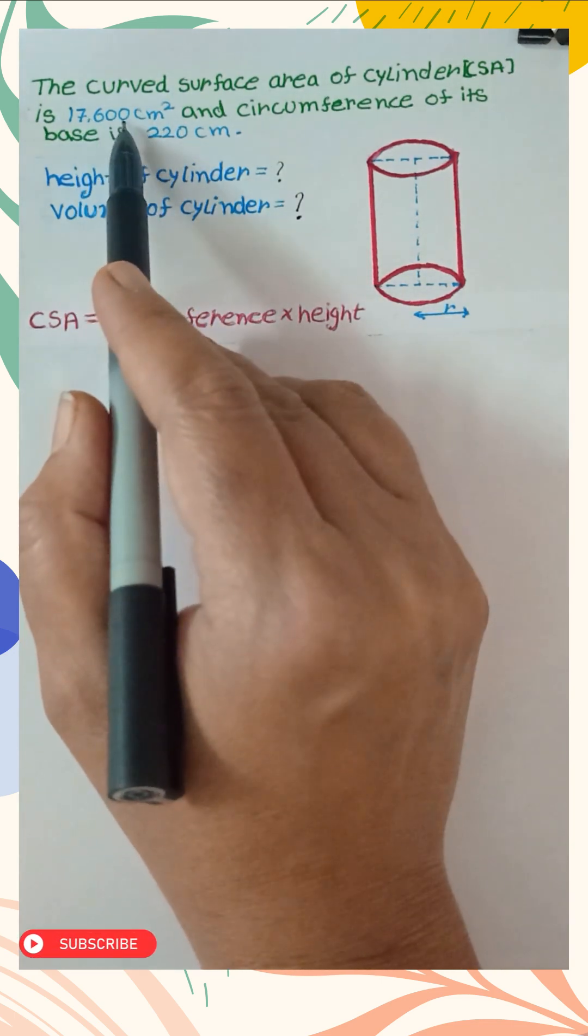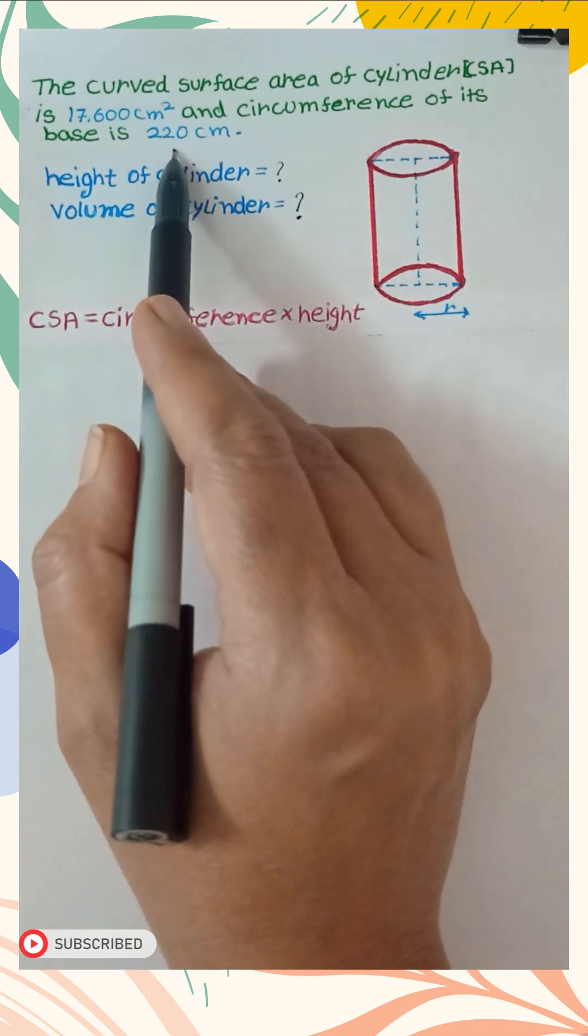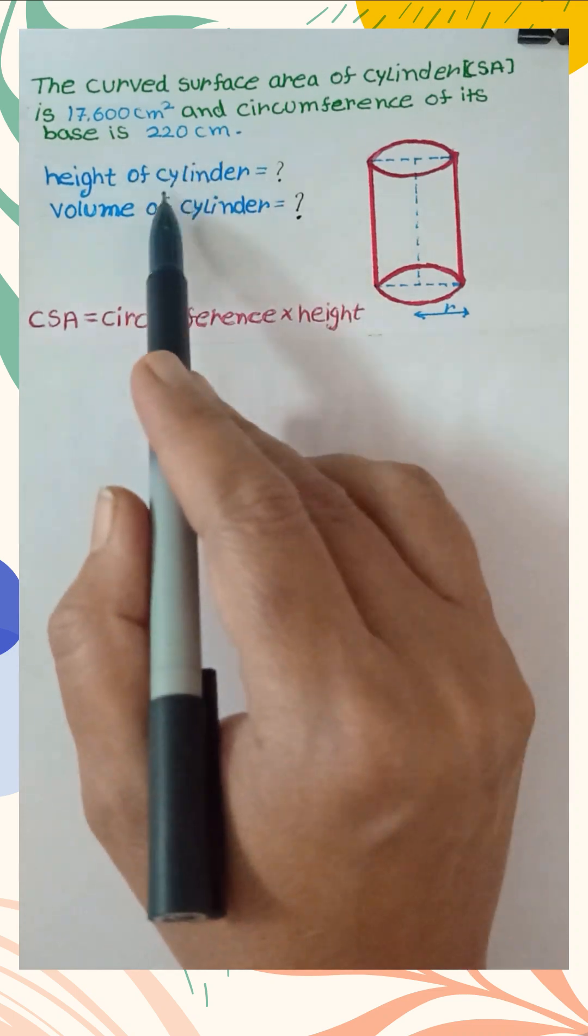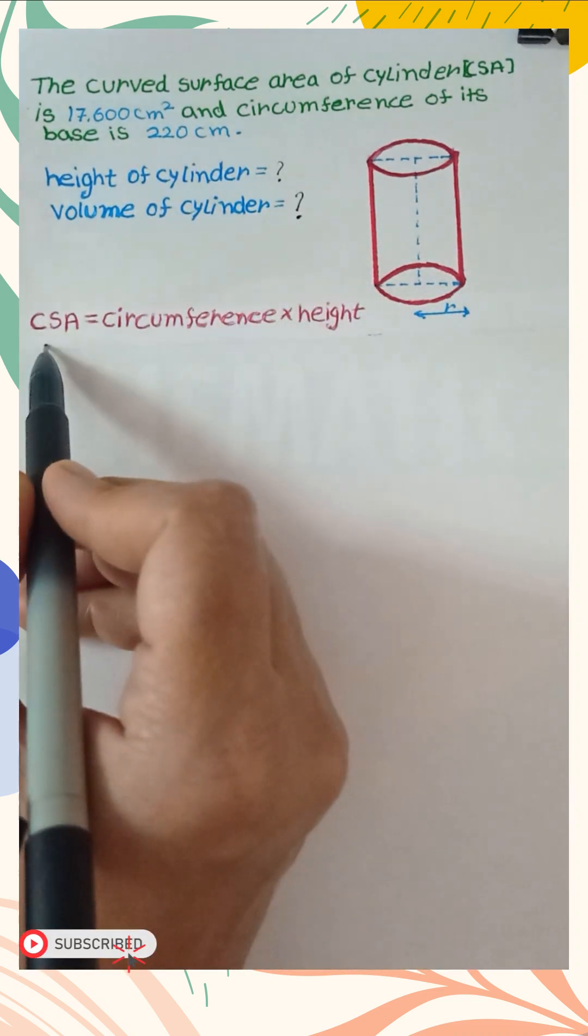A cylinder has curved surface area 17,600 cm² and circumference of its base 220 cm. We have to find the height of the cylinder and volume of the cylinder.